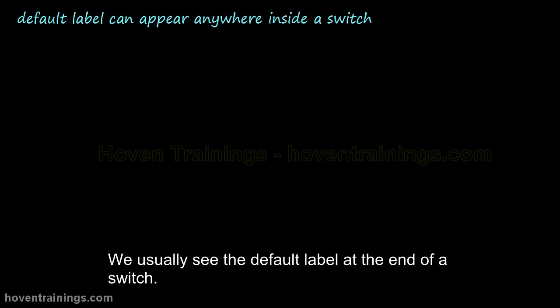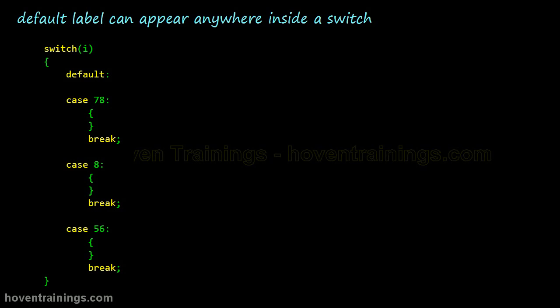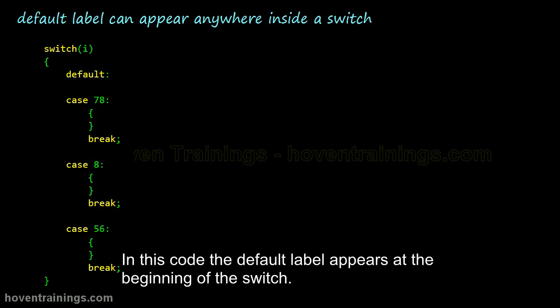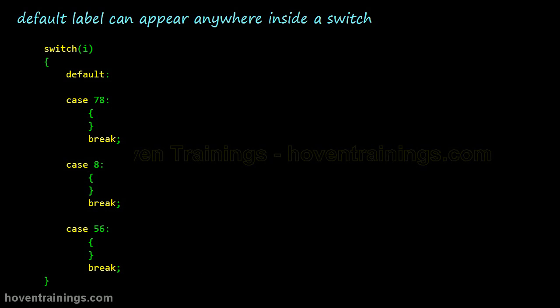We usually see the default label at the end of a switch. But it is not mandatory to place it there. It can appear anywhere inside the switch. In this code the default label appears at the beginning of the switch.